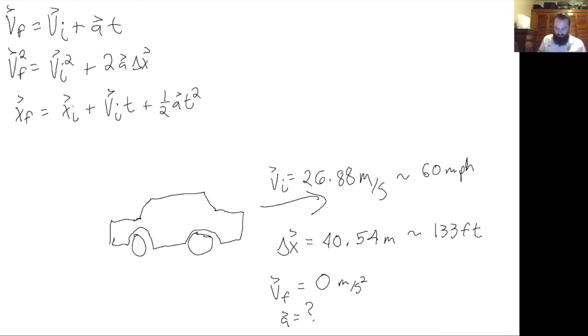Let's pick the kinematic equation that we want to use to solve this. Just looking at our list of variables and what we want to solve: we've got an initial velocity, a final velocity, a delta x, and we want to find the acceleration. So I think we should use this equation. Now, the other two equations have time, so we could solve for time and then plug that into the other equation to find the acceleration, but that's extra work we don't have to do. So we'll use this equation.